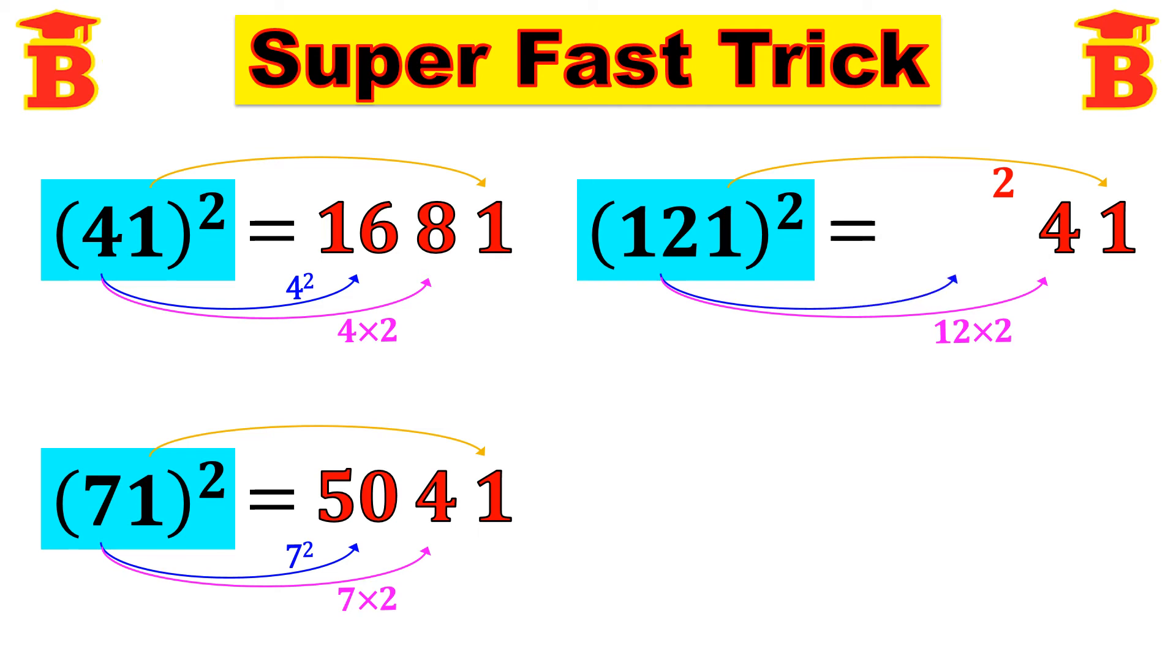And then next step, this same number 12, we have to square. So 12 square is 144. Already we have a carry number 2. So we have to add this number 144 plus 2 is 146. Therefore, 121 whole squared is 14641.